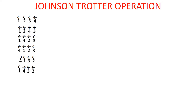In this permutation, 4 is the only mobile component. Step 2: exchange 4 and 3. Step 3: no digits greater than 4, so step 3 is not needed. We get a new permutation.